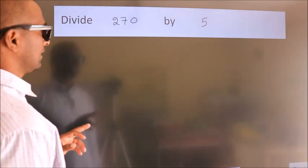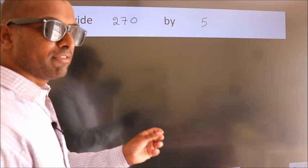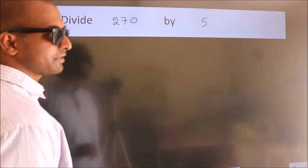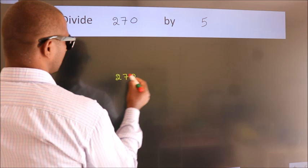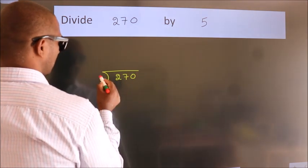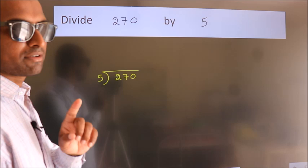Divide 270 by 5. To do this division, we should frame it in this way. 270 here, 5 here. This is your step 1.